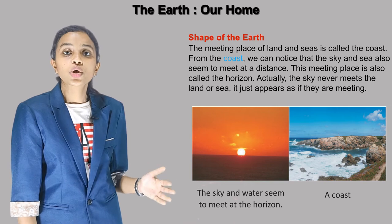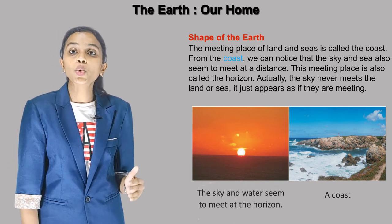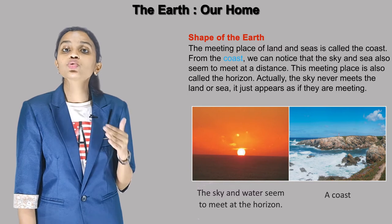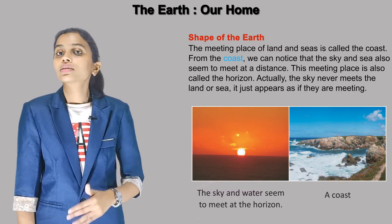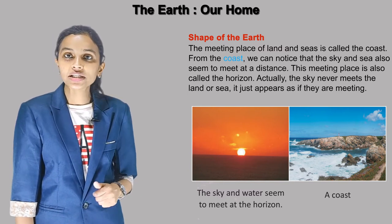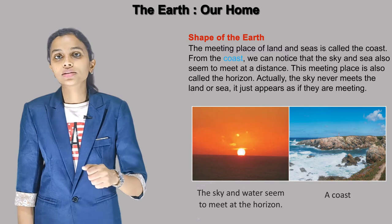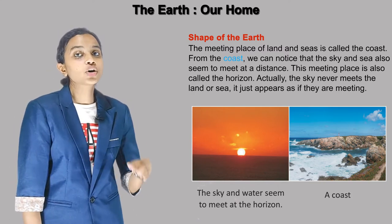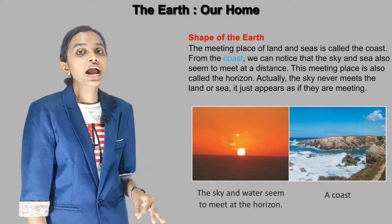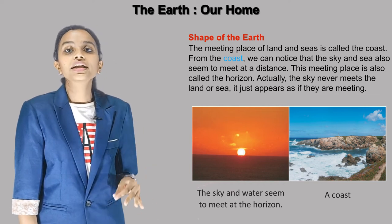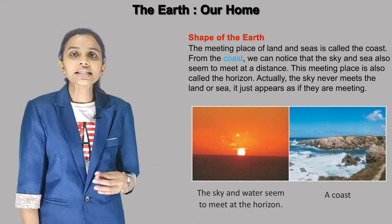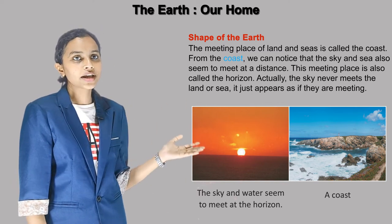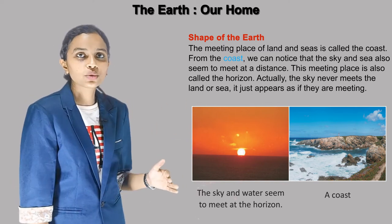From the coast, we can notice that the sky and the sea also seem to meet at a distance. This meeting place is also called the horizon. Actually, the sky never meets the land or sea — it just appears as if they are meeting. We just feel that the sky, oceans and land meet, but actually it doesn't happen.